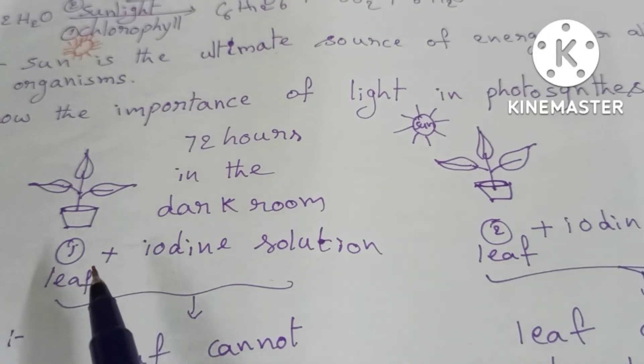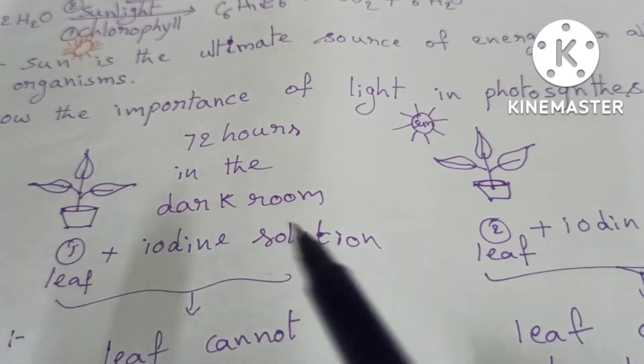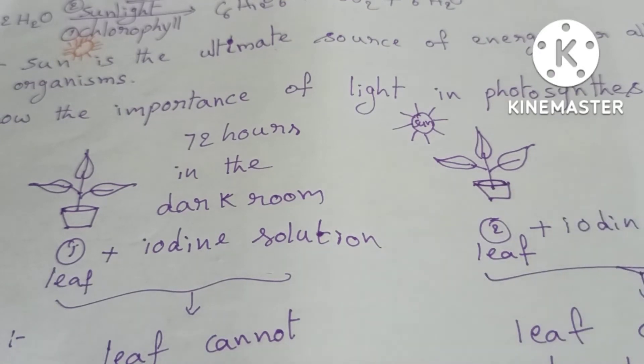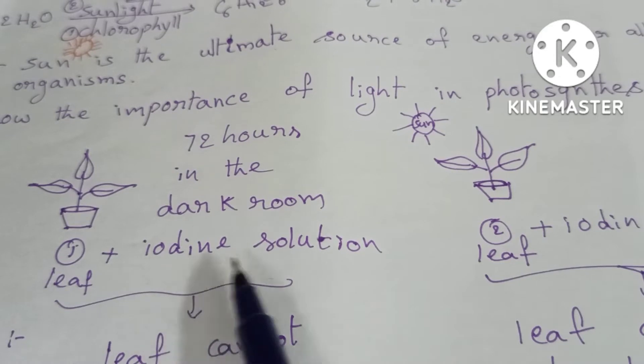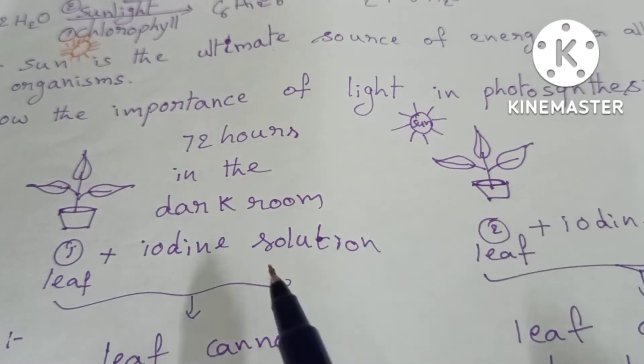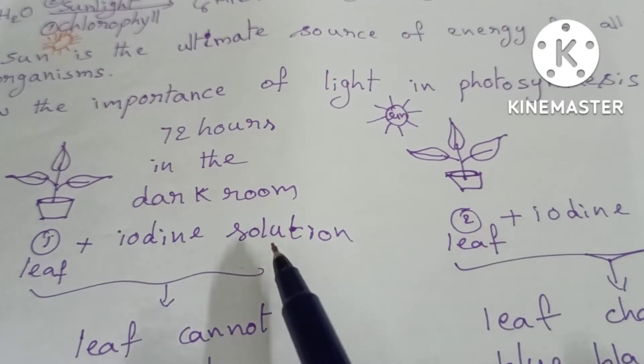Take the leaf from plant one and the leaf from plant two. Remove them, then add iodine solution to both leaves.